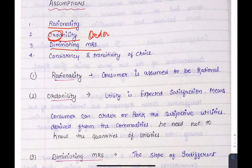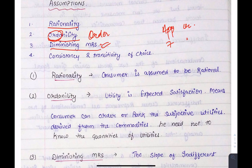Next is diminishing marginal rate of substitution, which will be discussed in detail. Basically, we are substituting one good for the other. For example, with apples and oranges: we will substitute 7 apples for 1 orange, then 6 for 2, then 5 for 3. So the rate for apples is going down because we don't want to substitute more apples. This is the diminishing marginal rate of substitution.